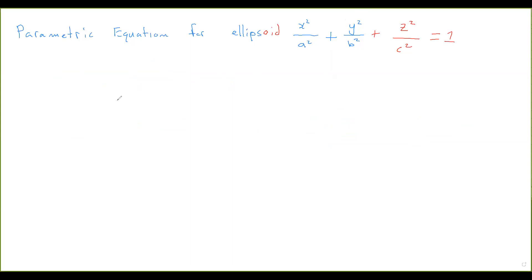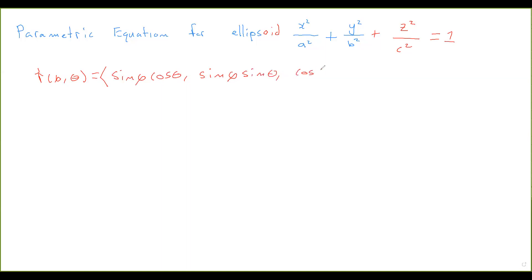Now we want to find the parametric equation for the ellipsoid. An ellipsoid is to a sphere exactly what an ellipse is to a circle — it's like an ovular sphere. Remember that the parametric equation for the sphere is r(φ, θ) = (sin φ cos θ, sin φ sin θ, cos φ), using φ and θ from spherical coordinates. For the ellipsoid, it's not x-squared plus y-squared plus z-squared equal to 1, but x-squared over a-squared plus y-squared over b-squared plus z-squared over c-squared equals 1.